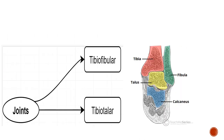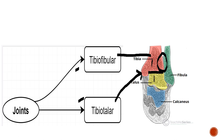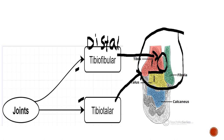There are two joints: the tibiofibular and the tibiotalar. The tibiotalar joint is between the tibia and the talus. The distal tibiofibular joint is the joint between the tibia and the fibula. The proximal tibiofibular joint exists at the upper end but is not involved in the ankle joint — only the distal tibiofibular joint and the tibiotalar joint are.